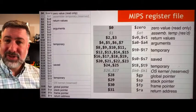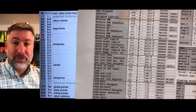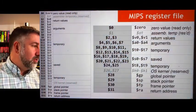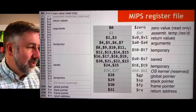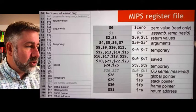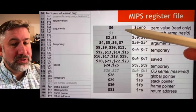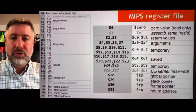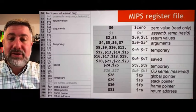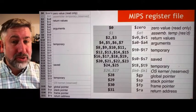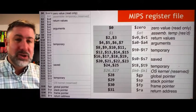These are the register names. This information is on a reference sheet you can download and print. The names correspond to their conventional functionality. The zero register is just the value zero — you can't store anything into it, you can only load the value zero. It exists because comparing things to zero is such a common operation that a special-purpose register dedicated to it is useful.